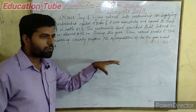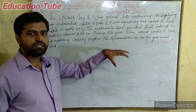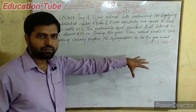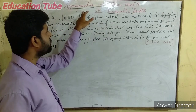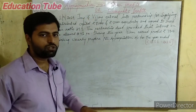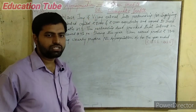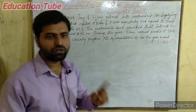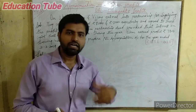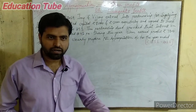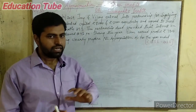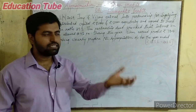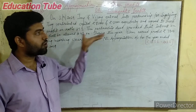So if the profit which the business has gained, and the appropriation expenditures — say interest on capital, salary to partner, commission to partner — if these are increased, the profit is reduced.